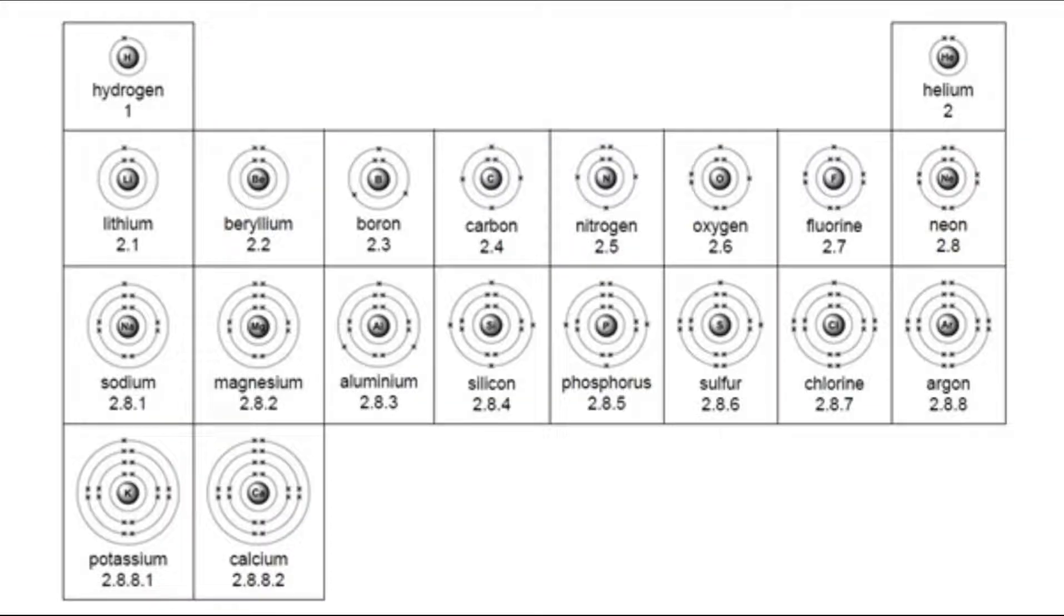Okay, so let's take a look then at our periodic table. There's a couple of things we can notice here. Let's maybe start by looking down a group. So if we look down this first group here, we've got hydrogen, lithium, sodium, potassium. What we notice is that in each of the valence shells, so that is the last shell that has electrons in our Bohr-Rutherford diagram, each of them have only one electron.